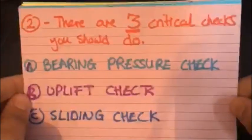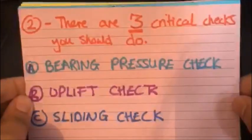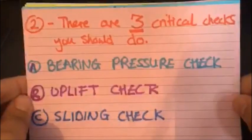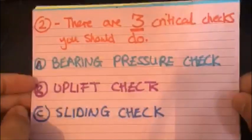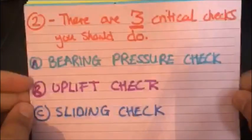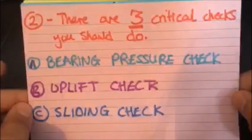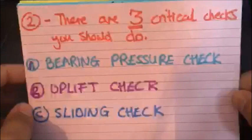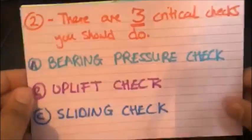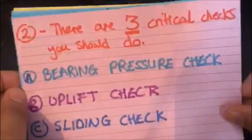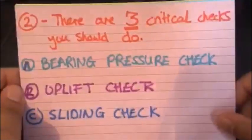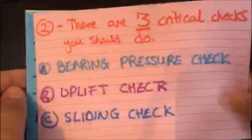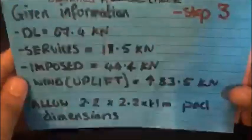Okay, so when you're designing a pad foundation, there are three main critical checks you should do. A is bearing pressure check, B is uplift check, and C is sliding check. These are the only certain checks that you've got to check your pad, see if it passes in all three. And if they do, then the pad dimensions that you've selected will work for the loading.